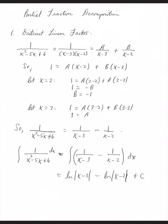In an integral situation, maybe we were asked to integrate that original rational term. The integral of 1 over x squared minus 5x plus 6 dx can now be written as the integral of these two smaller fractions. The derivative of each denominator is 1, so it's easy to find the antiderivative: natural log absolute value of the first denominator minus natural log of the absolute value of the second denominator, plus the constant of integration.